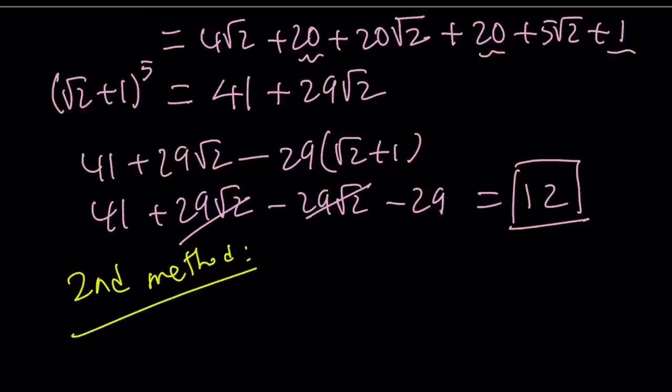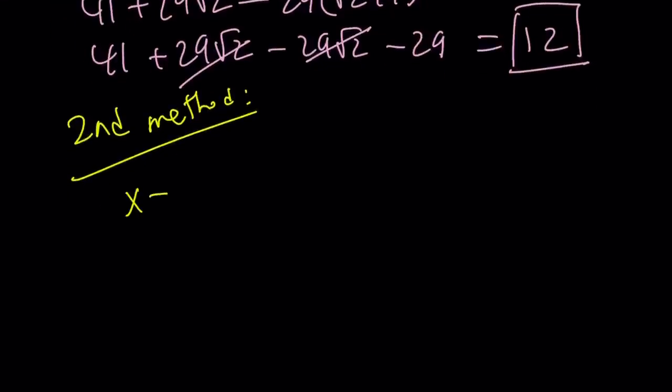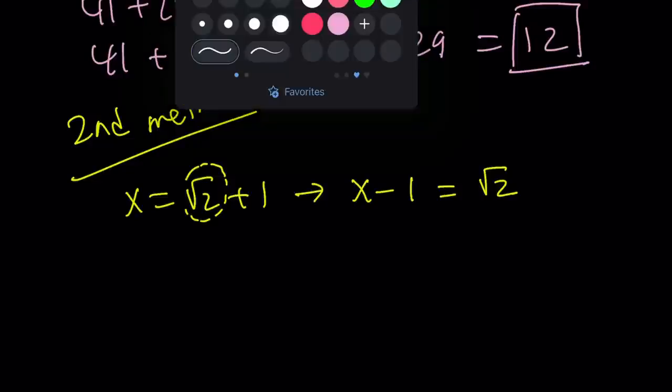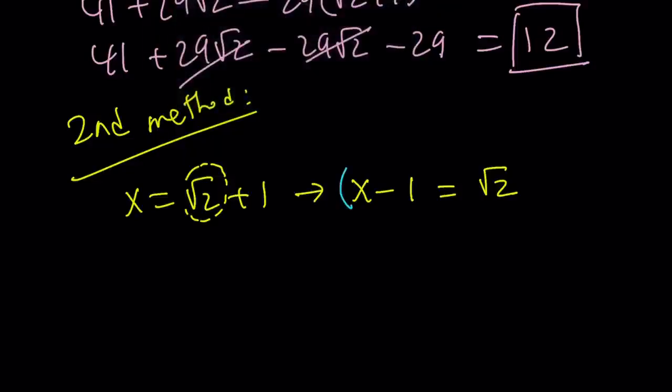Now for my second method, I'm going to use a different approach. Suppose x equals square root of 2 plus 1. From here, I'd like to isolate the radical, and the radical in this case is square root of 2. So let's subtract 1 from both sides. We're going to get x minus 1 equals square root of 2. Why am I isolating the radical? Because I want to square both sides and get rid of the radical.